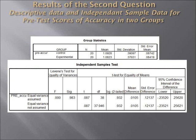Descriptive data and independent sample T-test for pre-test scores of accuracy showed that the mean score of the control group is 1.09 and the experimental group is 1.08, with P greater than 0.05, indicating no significant difference between the two groups in the pre-test.